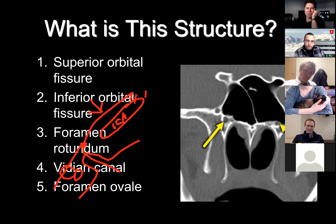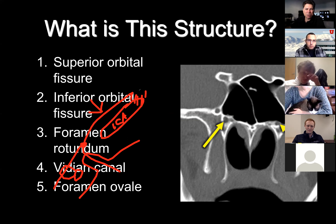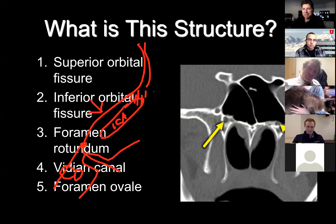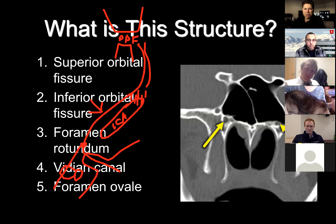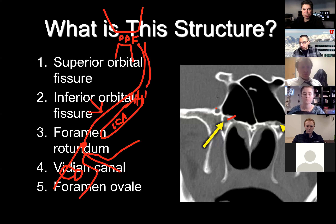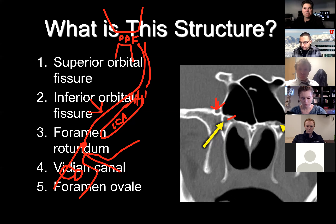The parasympathetic fibers from CN7 — the greater superficial petrosal nerve — join the sympathetic fibers that come off the carotid. Those sympathetic fibers from the carotid join the parasympathetic fibers from CN7 and together they form the long thin curvilinear pterygoid or vidian canal, which goes forward to the pterygopalatine fossa. Superior and lateral to that is foramen rotundum — really a tube — and V2 goes through there.